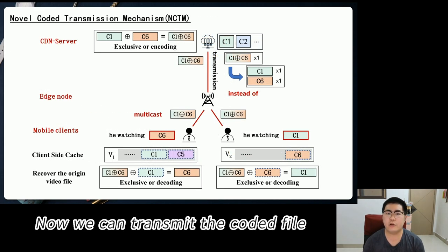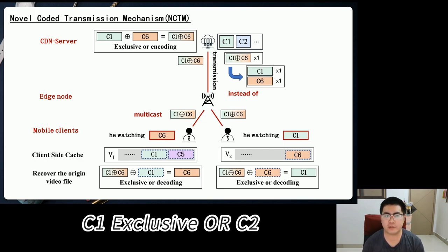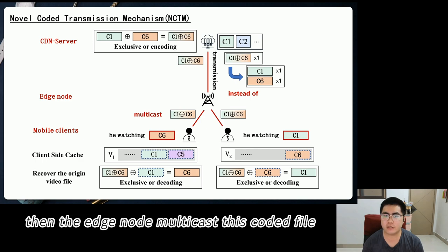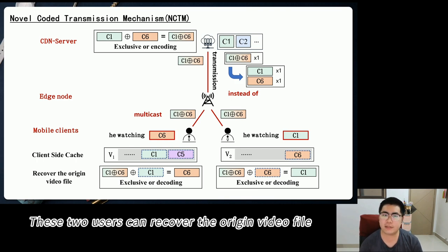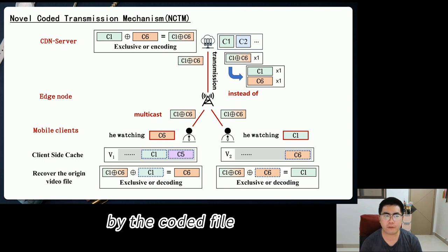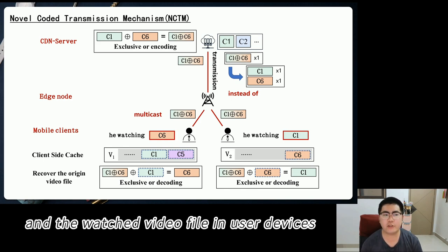Now, we can transmit the coded file V1 exclusive or V2 between the shared link. Then the edge node multicasts this coded file to these two users. These two users can recover the original video file by the coded file and the watched video files in the user device.